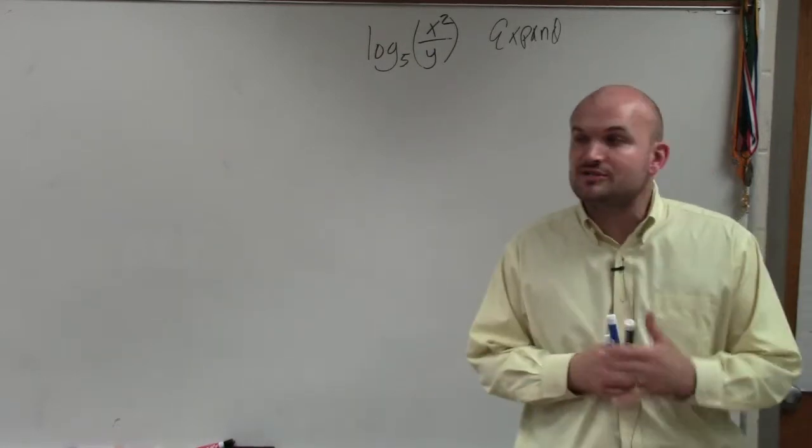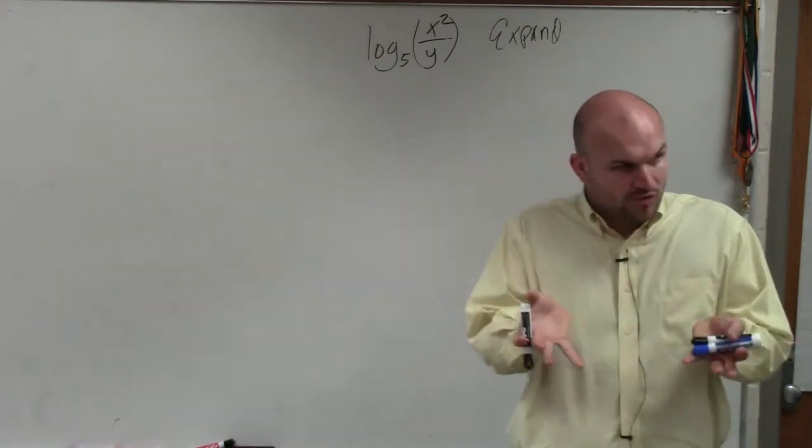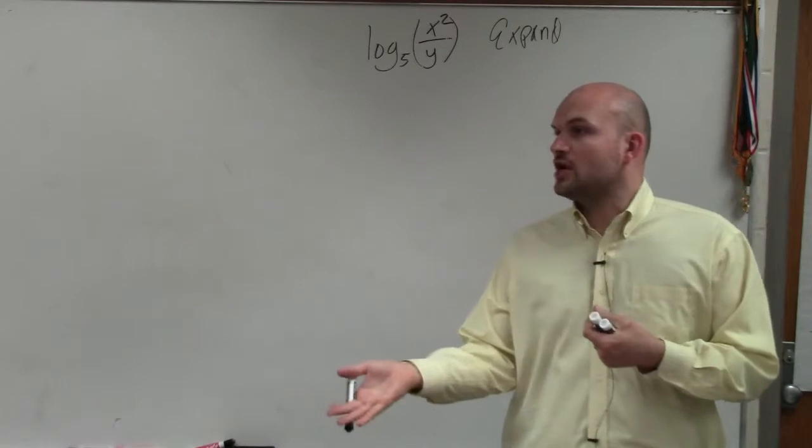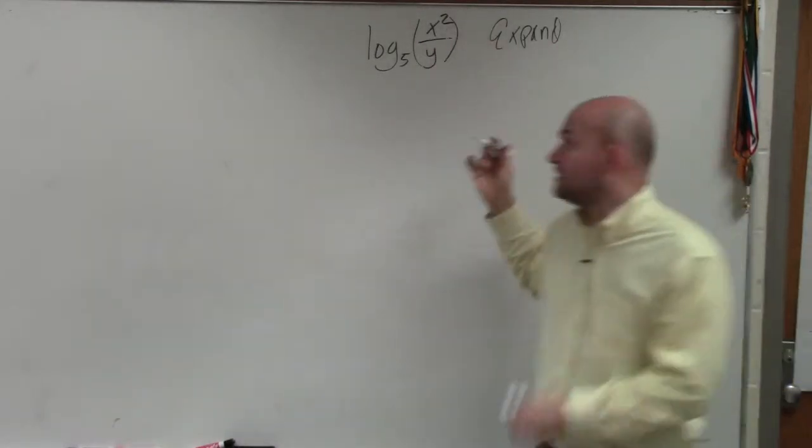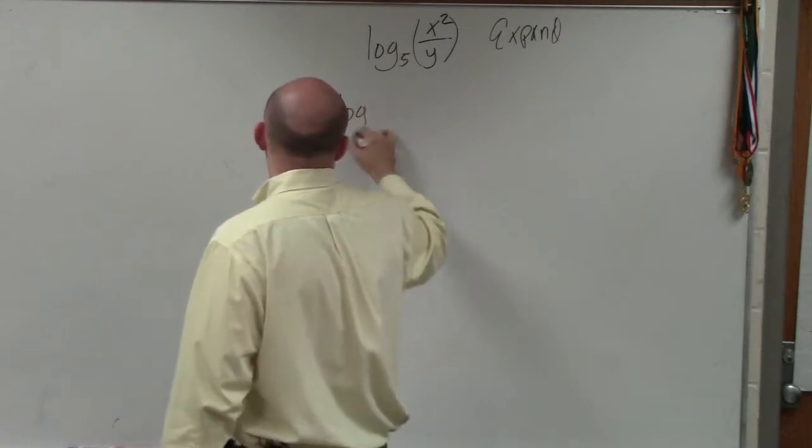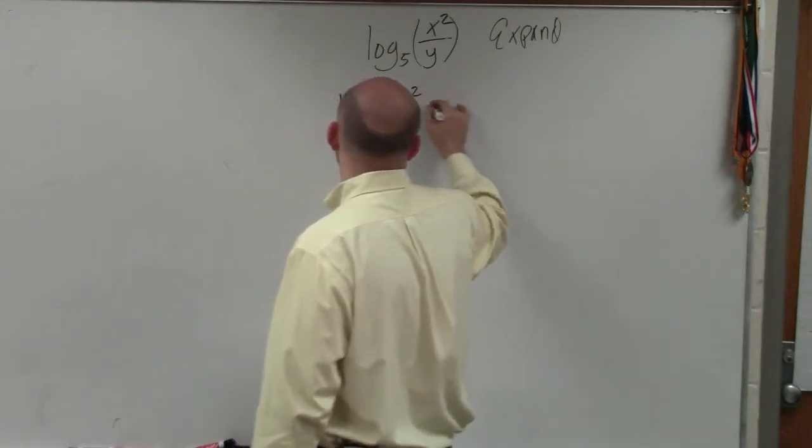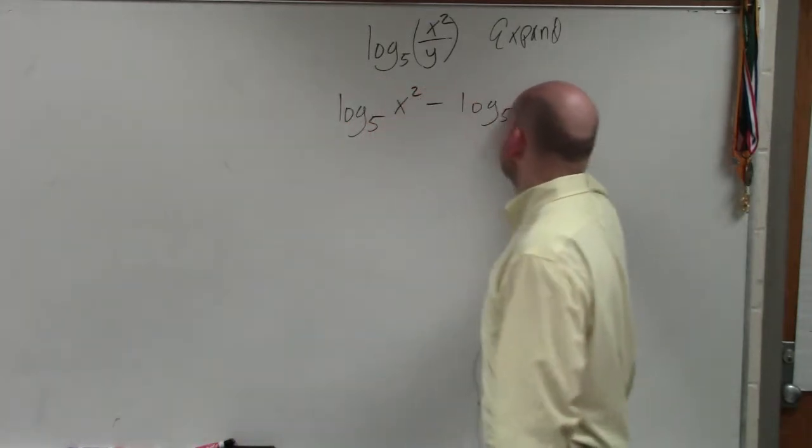So what we're simply going to do in this one is you guys can see that now we have the quotient. So going back to your rules and logarithms, looking at the quotient rule, you can see that the quotient is going to allow you to separate them by subtraction. So it would be log base 5 of x squared minus log base 5 of y.